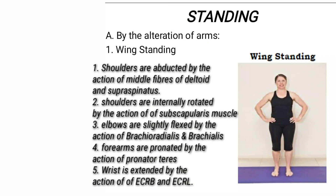The first position in standing is by the alteration of arms, i.e. wing standing. Here, the shoulders are abducted by the action of middle fibers of deltoid and supraspinatus. The shoulders are also internally rotated by the action of subscapularis. The elbows are slightly flexed by the action of brachioradialis and brachialis.